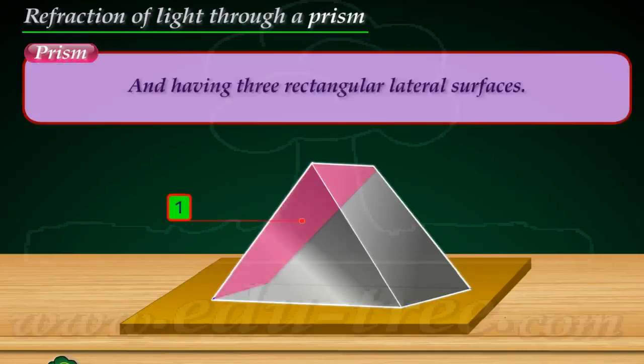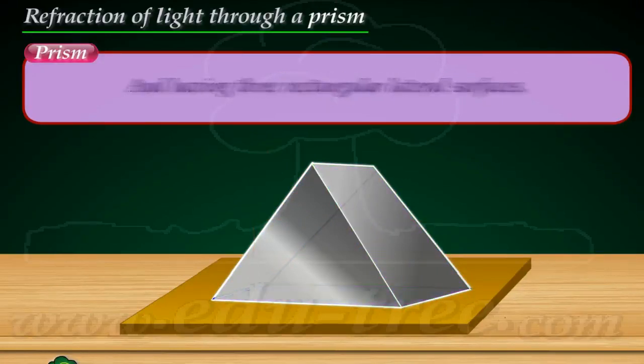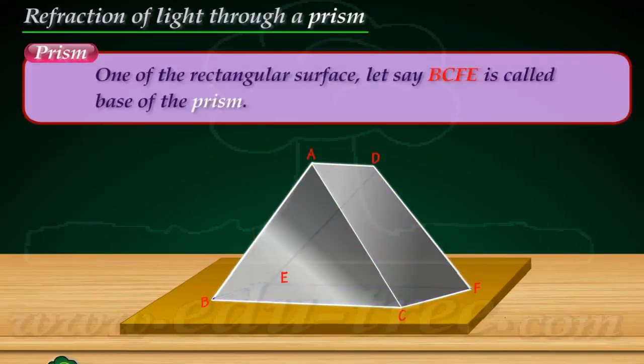And has three rectangular lateral surfaces. One of the rectangular surfaces, let's say B, C, F, E, is called the base of the prism.